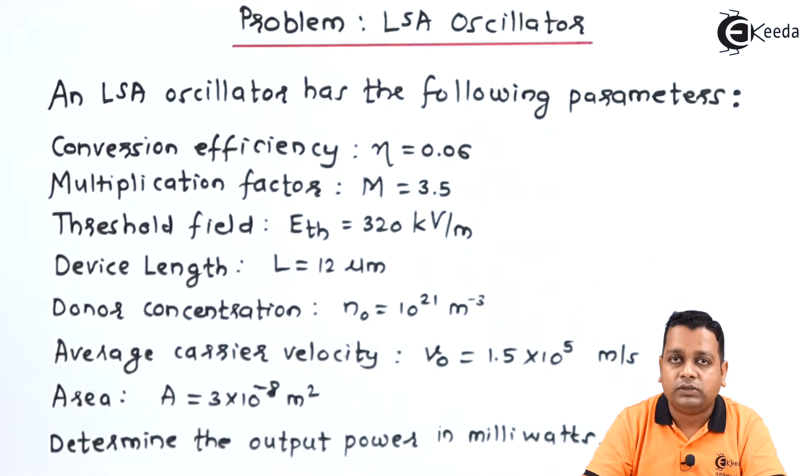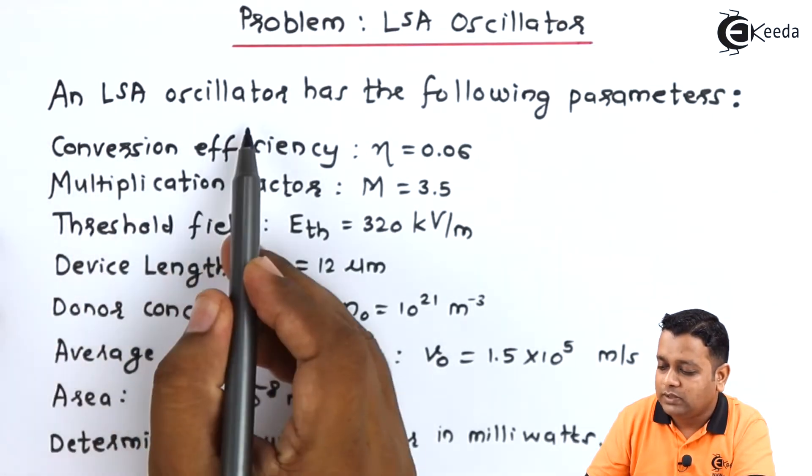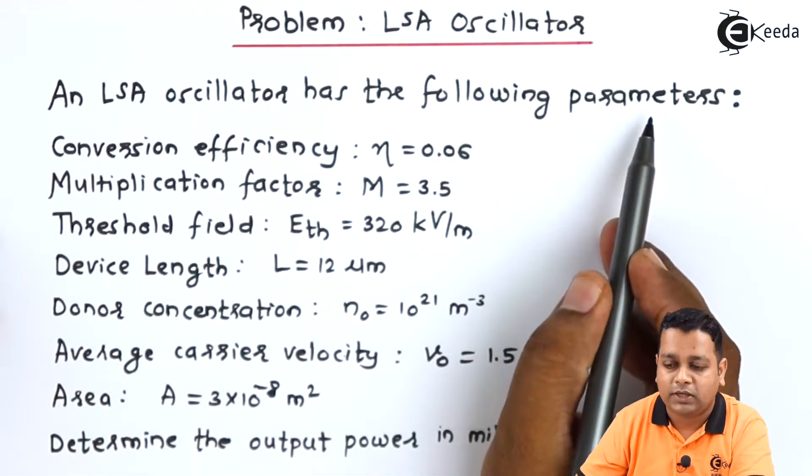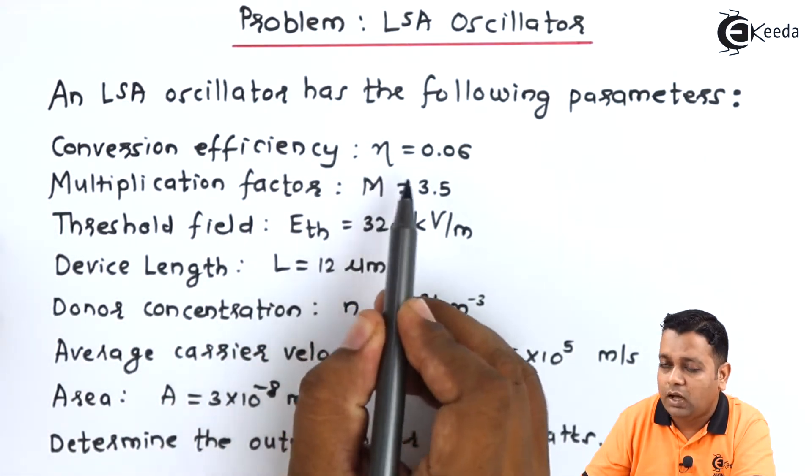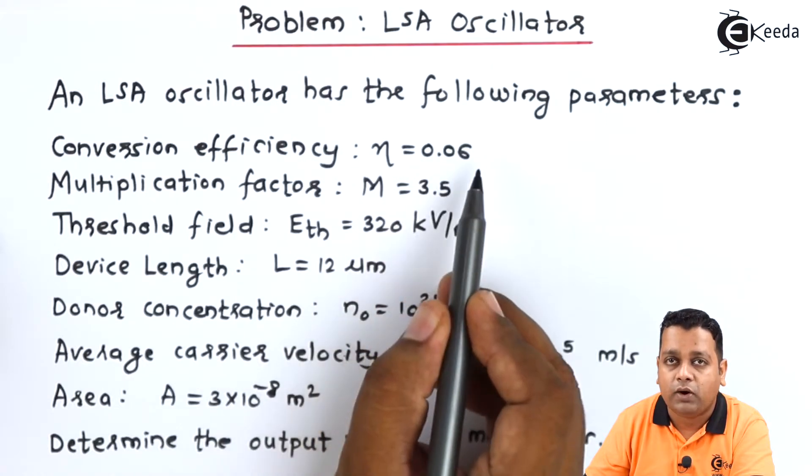We start with our topic and here we are provided a problem statement. The problem statement is an LSA oscillator has the following parameters. The conversion efficiency is denoted here with the symbol eta, the value is 0.06.